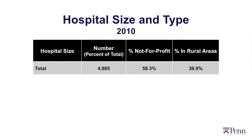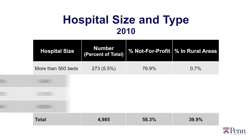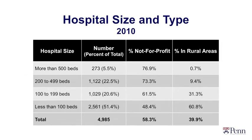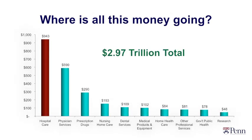All of this is hospital-based care — it's the biggest part of the healthcare system. We have nearly 5,000 hospitals in the United States. Just 5% of them, 273, are large 500-or-more bed hospitals. Most hospitals in the country are actually small, fewer than a hundred beds. In the US, we spend nearly a trillion dollars on hospitals — about a third of all healthcare spending.